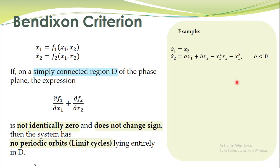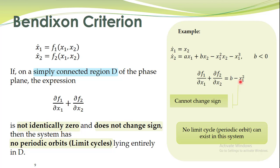Another example: ∂F1/∂x1 is zero, and ∂F2/∂x2 equals B minus x1². So the expression is B minus x1², where B is some negative number. Since B < 0, this expression cannot change sign — it is always negative. It cannot be identically zero. Therefore, no limit cycle can exist in this system.